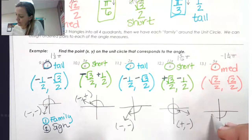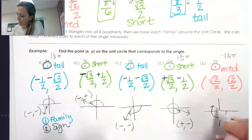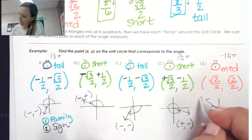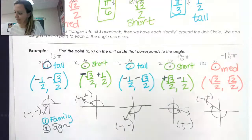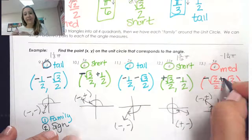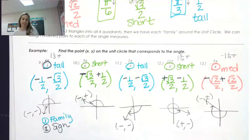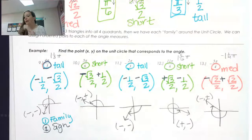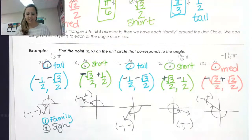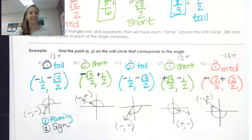For negative 5π/4, the denominator 4 is the medium family with values √2/2, √2/2. Negative 5π/4 is negative 1¼π, which lands in quadrant 2 — negative x and positive y: (-√2/2, √2/2). That's a brief preview of the unit circle and special right triangles to prepare for our activity in class tomorrow. If you have questions, send me a Remind message. Have a great day.